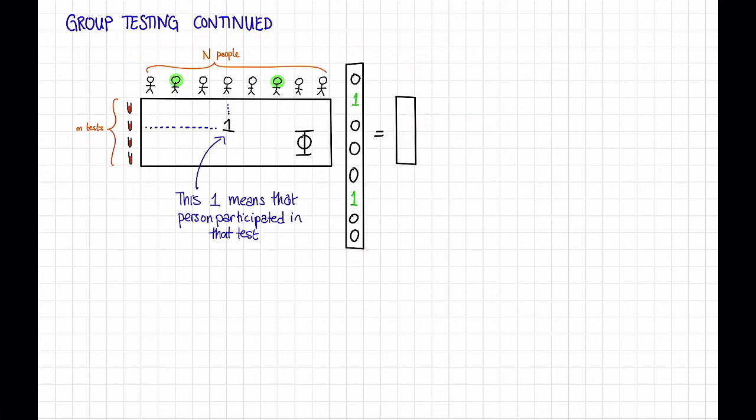So every time I want to do a multiplication, I just do an and, and every time I want to do an addition, I just do an or. What am I going to get in this coordinate of the output? So this is going to be the or over all of the people of the and of the Boolean variable